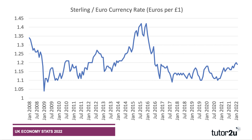The pound then traded reasonably constant at about €1.10, €1.15. This time the pound has been appreciating against the euro in recent times and is now up to €1.20.